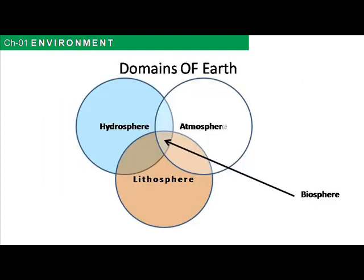Domains of the Earth: on Earth, three different components meet so that humans can survive. These are the elements of land, water and air, called the domains of the Earth — namely the lithosphere, hydrosphere and atmosphere — which give rise to the biosphere.